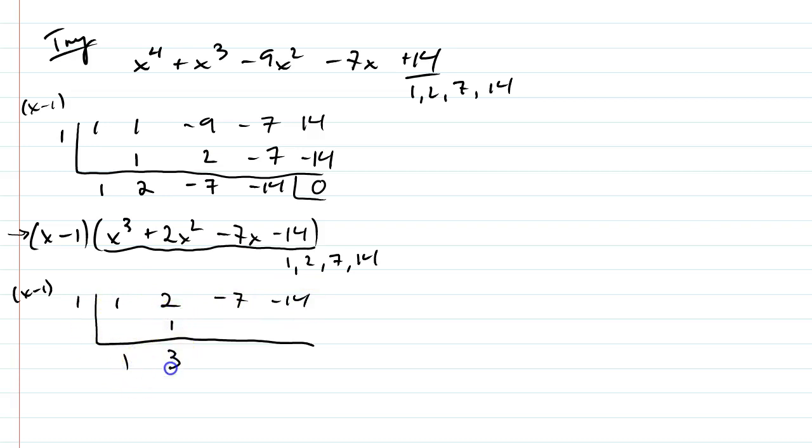So let's keep going here. 1, 1, 3, 3, negative 4. This is not going to work. And just keep your notes organized. So I'm going to try now negative 1 as my k. This is not going to work out either.